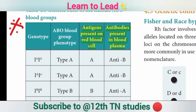In the tabular column, antigen is present on the RBC surface, and antibody is present in the blood plasma. These are the key distinctions shown in the table.